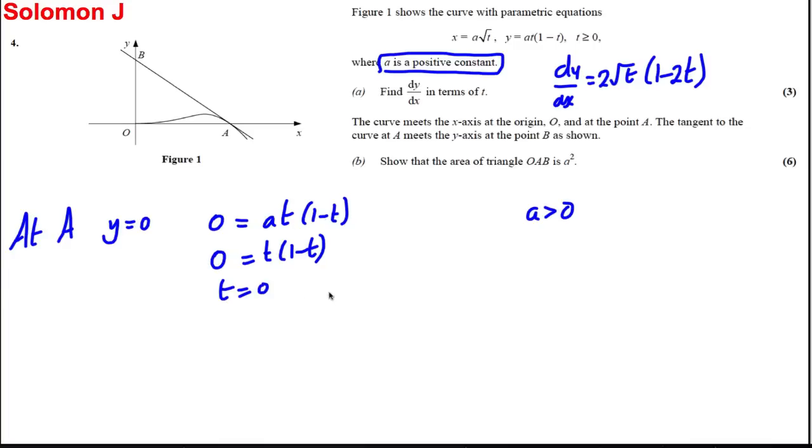Clearly here t must be 0 at the origin, and here it must be where t equals 1. So we've got t = 1 at this point here. We're told about the tangent to the curve meeting the y-axis at point B.